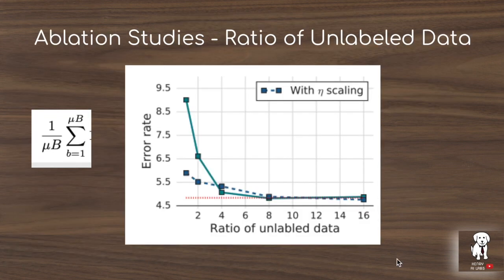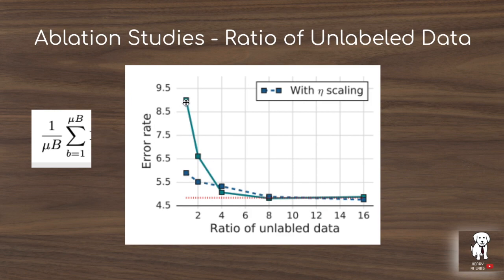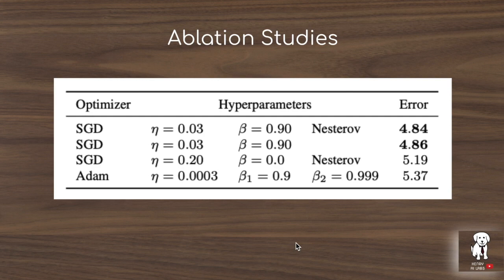Another interesting ablation study is the ratio of unlabeled data. The mu parameter controls the amount of unlabeled data points relative to labeled data points in the supervised portion of the loss. When you have only twice as many unlabeled data points, you have a higher error rate compared to using more unlabeled data. They also show the result of learning rate scaling — scaling the learning rate with respect to batch size — which improves performance, especially when you have less unlabeled data. Also in their ablation studies are the effects of different training hyperparameters, like whether you use stochastic gradient descent or the Adam optimizer, learning rates, momentum, and beta terms, showing how these can result in much different performance with FixMatch.